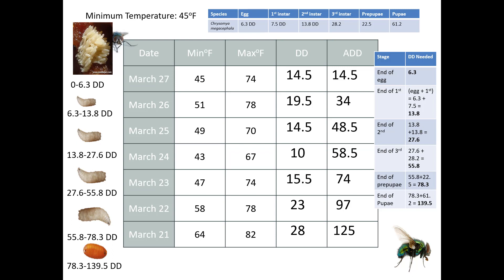Let's say I find eggs on March 27th. We're using Chrysomya megacephala. We've got the same exact calculations — degree days, since temperature data is in days. We've got our stages and degree days needed. I've done my ranges: I need 0 to 6.3 degree days for eggs, then first instar, second instar, third instar, pre-pupae, and pupae. We've got average temperature, the threshold, all that.